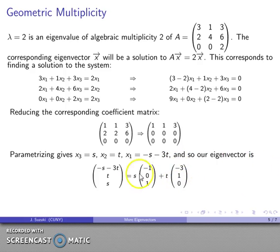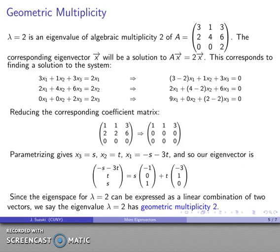And my eigenvector is going to be any linear combination of those two basis eigenvectors. Now, since the eigenspace for lambda equals 2 can be expressed as a linear combination of these two vectors, we'll say that the eigenvalue has geometric multiplicity 2. And this corresponds to the number of eigenvectors I get for that particular eigenvalue.